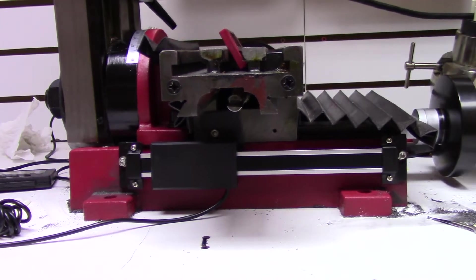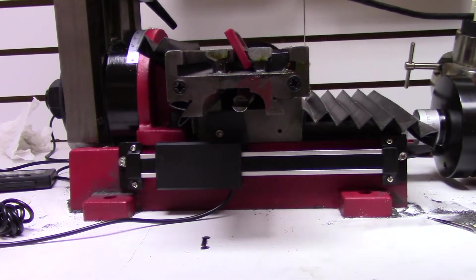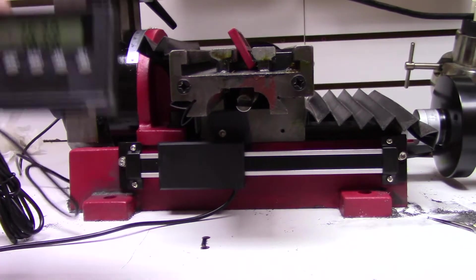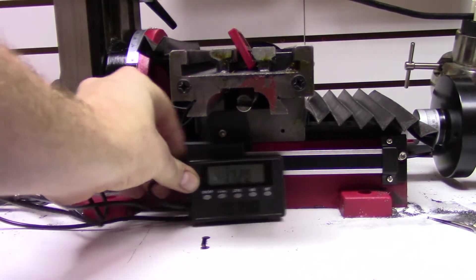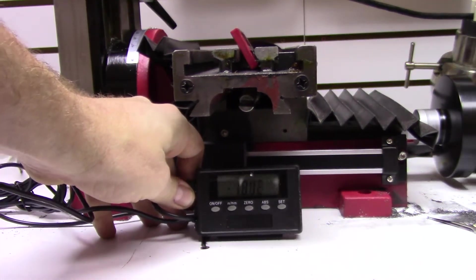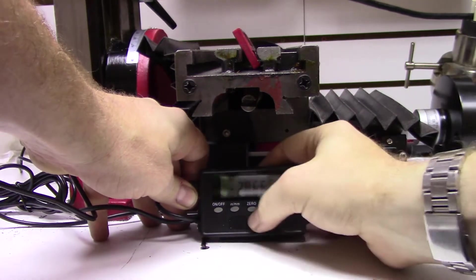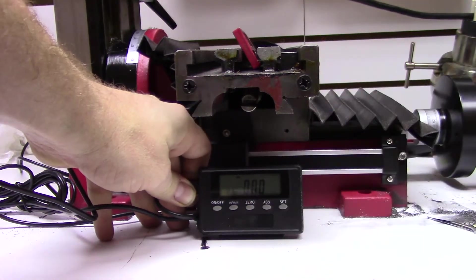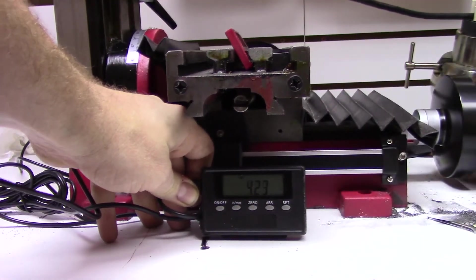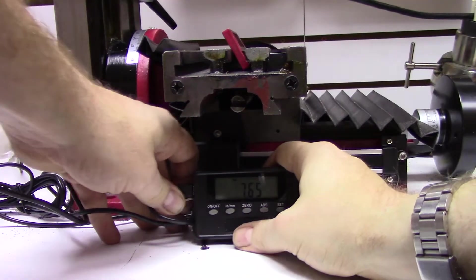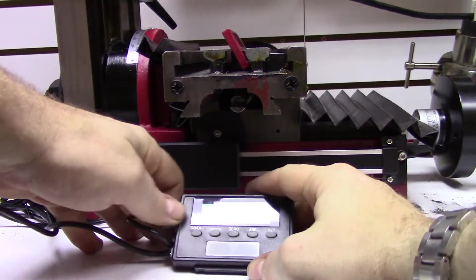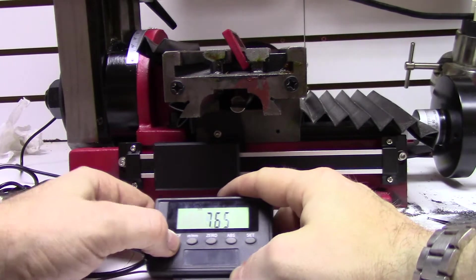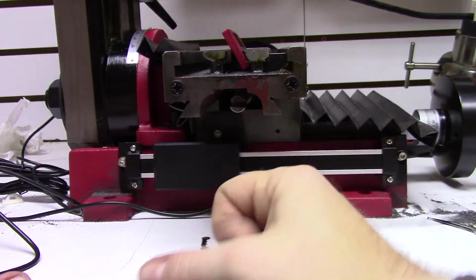As you can see, it's going negative because it's coming towards us. We can click zero and it'll go positive when it goes away from us. That's the way I want it, so that's two axis done.